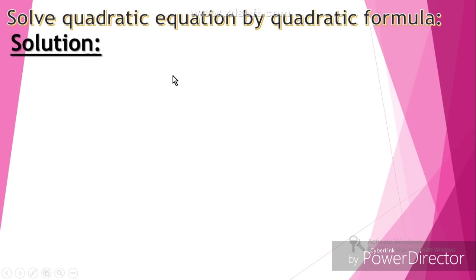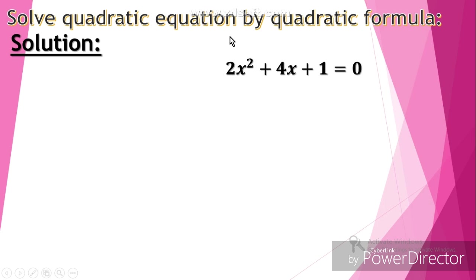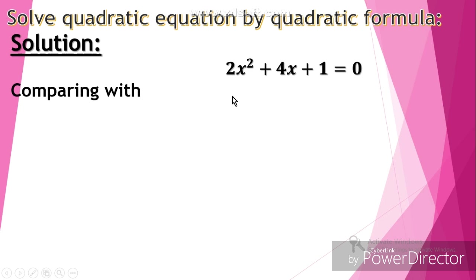First, let's take an example: we have the quadratic equation 2x squared plus 4x plus 1 is equal to 0, with degree 2. This is a quadratic equation. To solve this equation we have three methods, and now we are going to discuss the quadratic formula method.